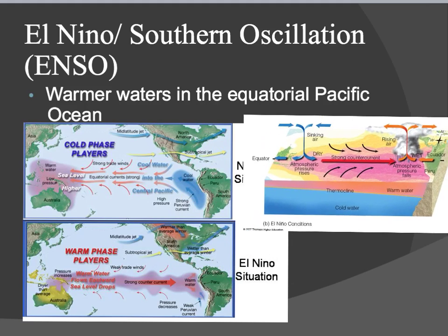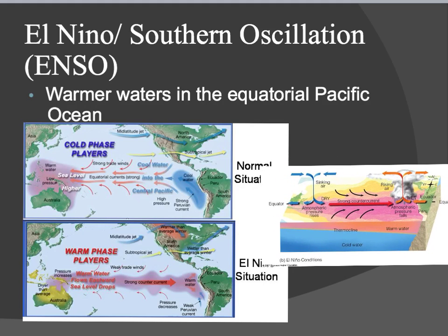Another reason El Niño is problematic — besides extra flooding and rain — is that when this warm water moves back over, it keeps a layer of warm water on top and we don't get the nutrient-rich upwelling that normally happens. In normal conditions, the cool water upwells and brings nutrients up to the top so plants and other organisms can get them. But during El Niño, it's not good for the algae, plants, or any of the other organisms that live there.